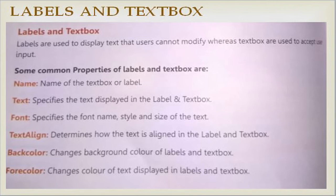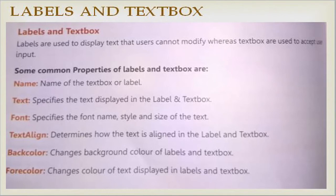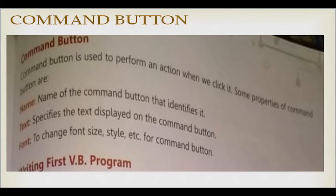Labels are used to display text that users cannot modify, whereas text boxes are used to accept input. For example, on Facebook, 'First Name' is a label and the box next to it where you type is the text box. Common properties of labels and text boxes include: Name, Text (specifies the text displayed), Font (name, style, size), alignment (how text is aligned), background color, and foreground color.